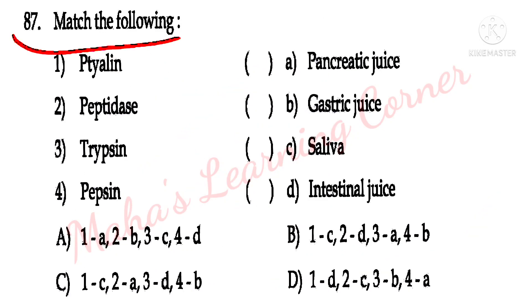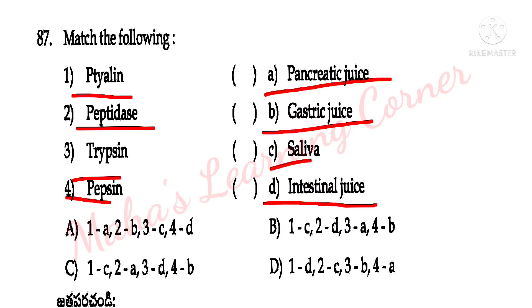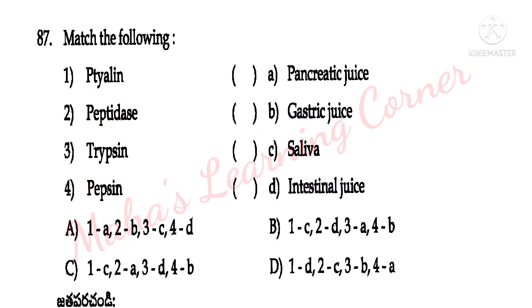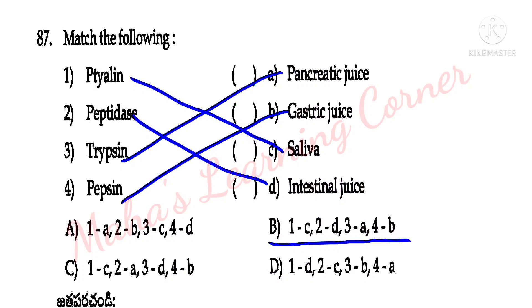Match the following — digestive enzymes: ptyalin, peptidase, trypsin, pepsin. Pepsin is found in gastric juice. Correct answer: 1-C, 2-D, 3-E, 4-B. Option B is the correct answer.